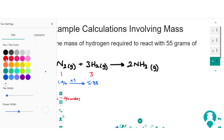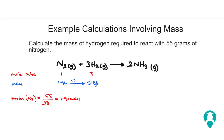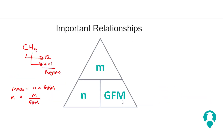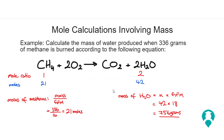Now we can work out the mass of hydrogen. Mass of hydrogen equals number of moles times GFM, which is 5.88 multiplied by 2. The GFM of hydrogen is 2 because it's diatomic. That gives us 11.76 grams. The most important thing is to remember this triangle and how to use it — and you really can't go wrong with these calculations.